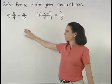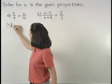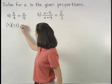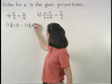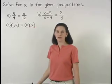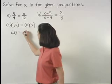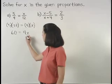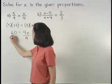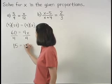we know that the product of the extremes, 5 times 12, equals the product of the means, 4 times x. So we have 5 times 12, or 60, equals 4 times x, or 4x. And dividing both sides by 4, 15 equals x.